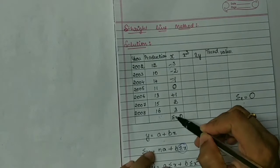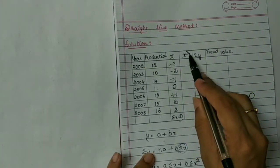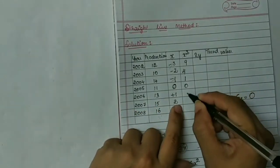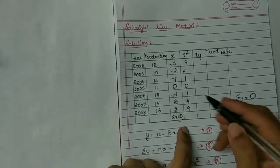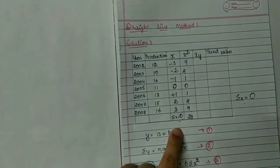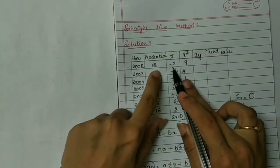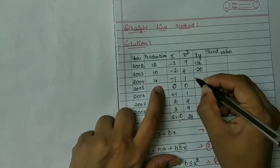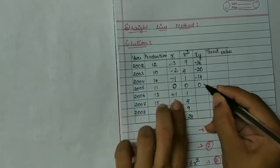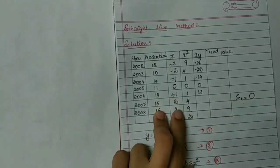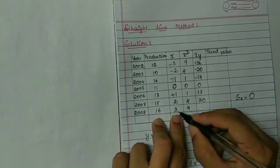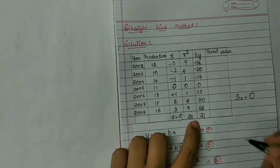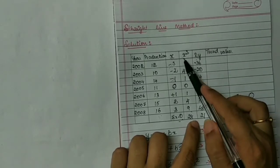Now our next step is x squared. x squared is nothing but x into x: minus 3 squared is 9, minus 2 squared is 4, minus 1 squared is 1, 0 squared is 0, 1 squared is 1, 2 squared is 4, 3 squared is 9. Our summation x squared is 28. The next column is xy — x into y: minus 3 into 12 is minus 36, and so on. When you total xy, it will be 21. So we calculated x, x squared, and xy.